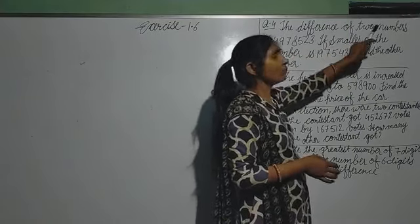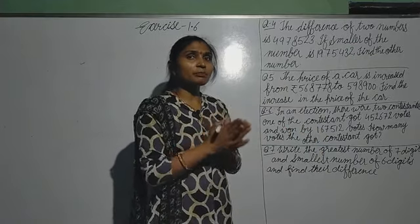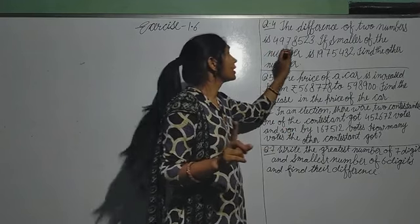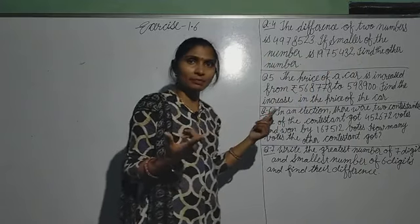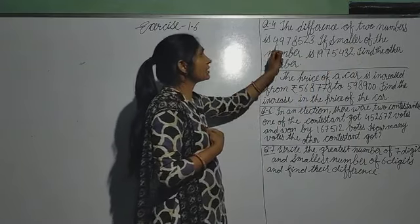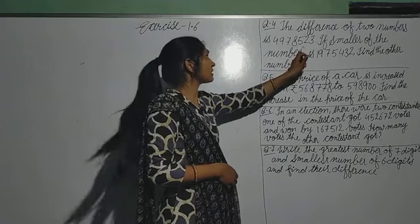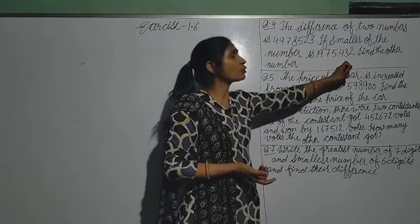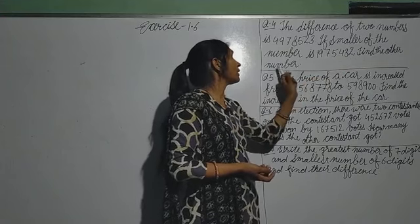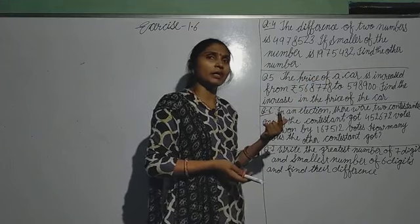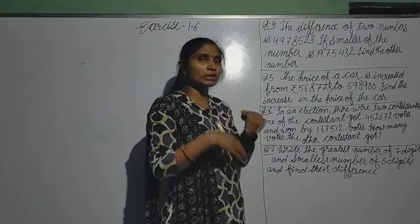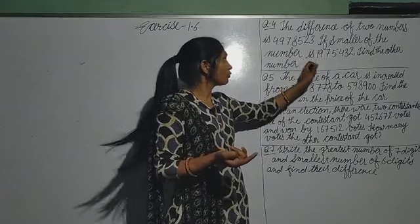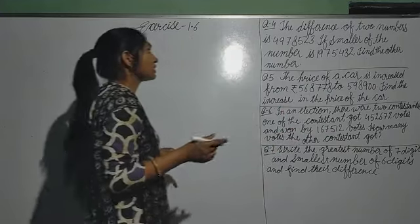The difference of two numbers — that is, after subtraction of two numbers, the answer that comes is given. If the smaller of the numbers — just like the example where 9 minus 2 gave 7, so 7 is the difference. The smaller number is 2. Find the other number — meaning we have to add both the given numbers. We have to add both numbers to find it. Clear?